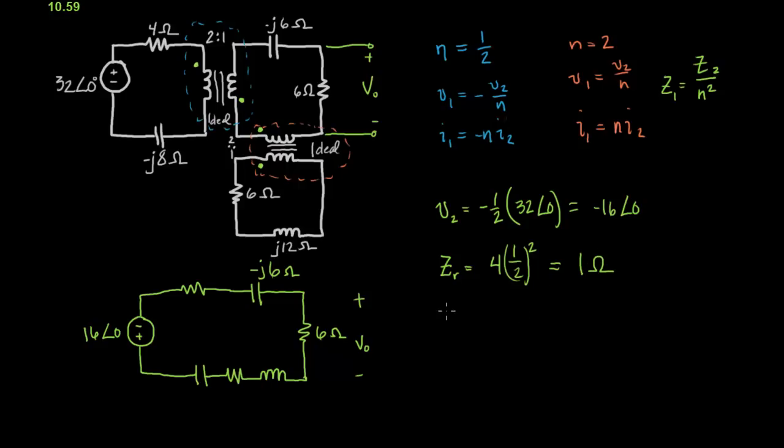Okay, and then the capacitor equals minus J8 times 1 half squared. And that simply equals minus 2, minus J2. Okay, so this is 1, and this is minus J2.